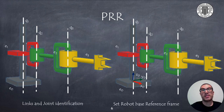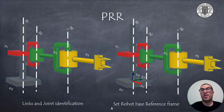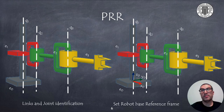In this second example, we have a PRR robot with one prismatic and two revolute joints. As you can see, the procedure is the same as before. We first identify the links and joints, numbered from E0 to E3 and Q1 to Q3 respectively. Next, we set the position of the reference frame, usually at the bottom of the robot, with the Z0 axis pointing in the direction of joint 1.